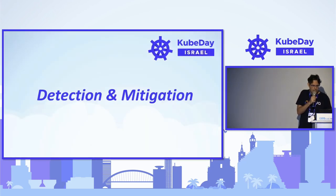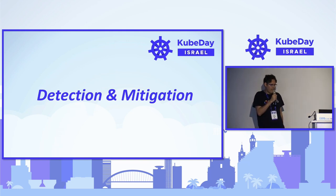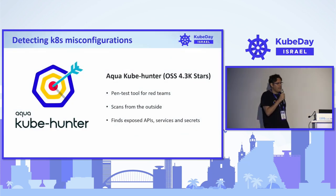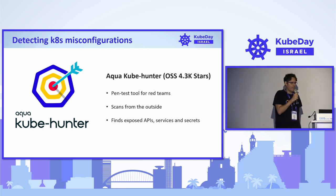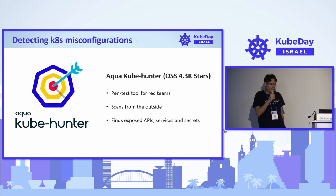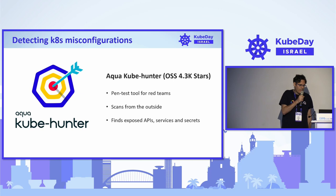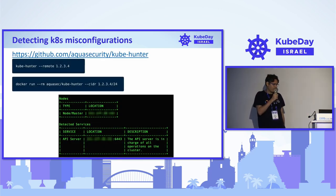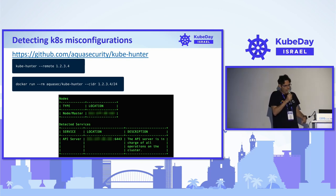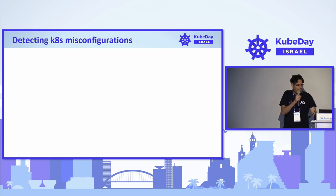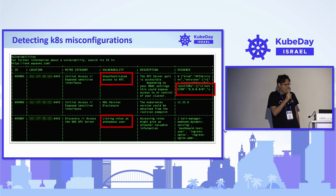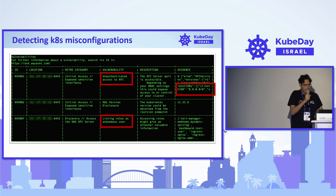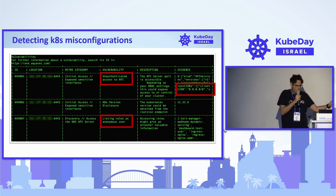Let's talk about detection and mitigation. One open source tool by Aqua Security is Aqua KubeHunter — great for pen testers and red teams, designed to scan from the outside. It provides information on exposed APIs, services, secrets, and more. You can download it from Aqua Security's GitHub or run it from Docker Hub. It will report on your nodes, API server exposure, whether unauthenticated users can list roles, secrets, and so on.